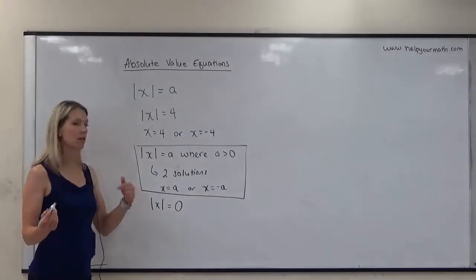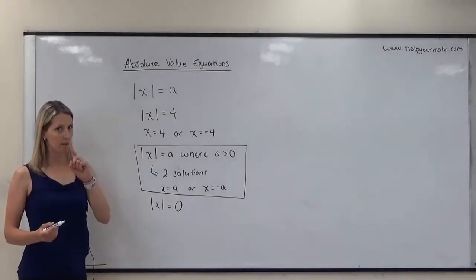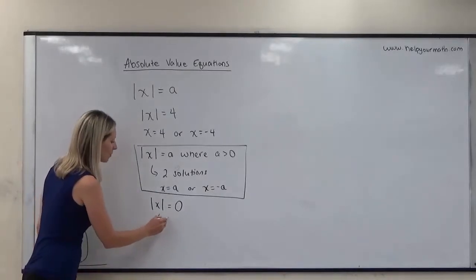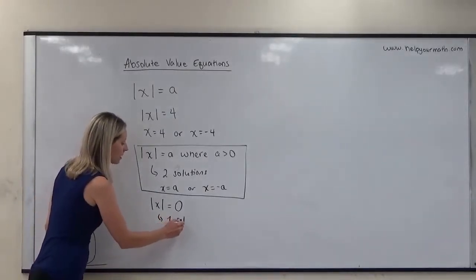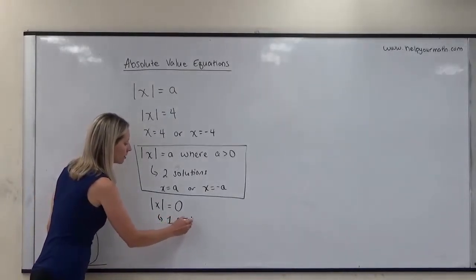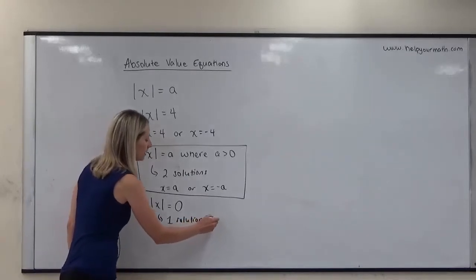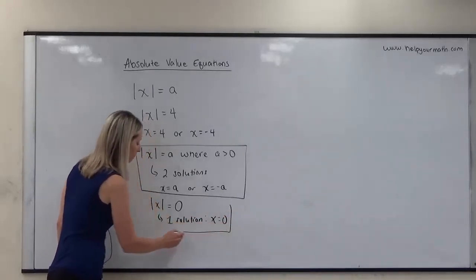How many values are zero units away from zero on a number line? Just one. So when the absolute value equals zero, there is exactly one solution, and that solution is when what's inside the absolute value bars equals zero.